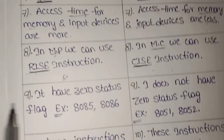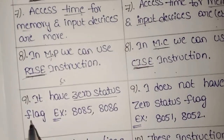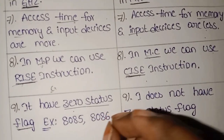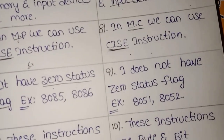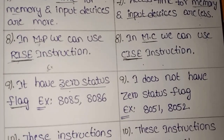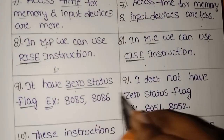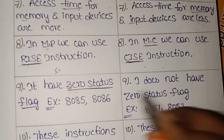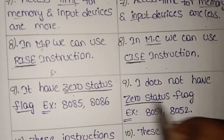Next, the microprocessor has a zero status flag. This zero status flag is present in the block diagrams of microprocessors. There are flags such as status flags and zero flags. In microcontrollers, there is no zero status flag — without the microcontroller, we can use zero status flag.